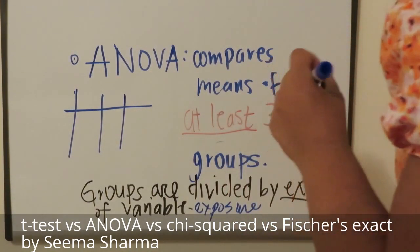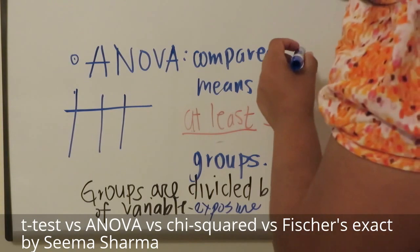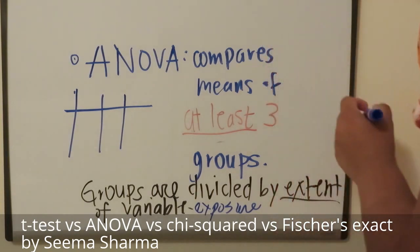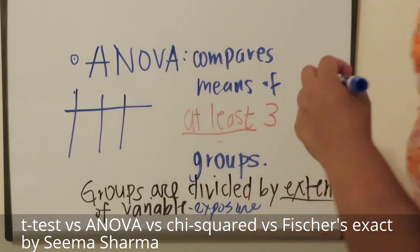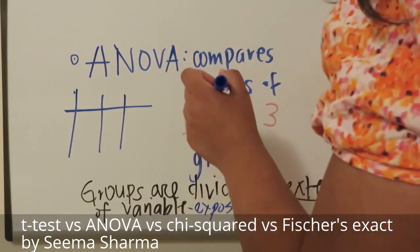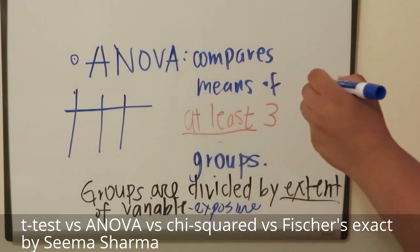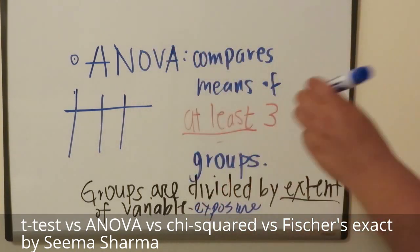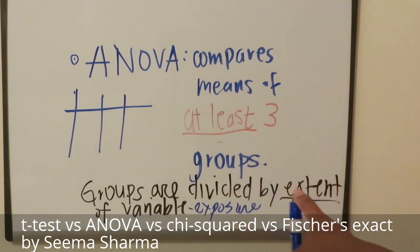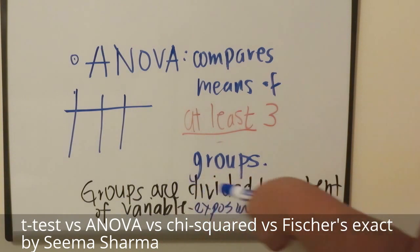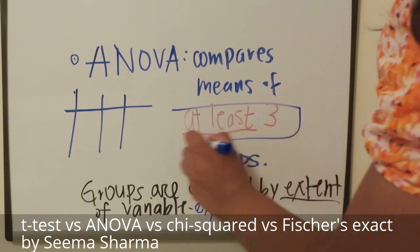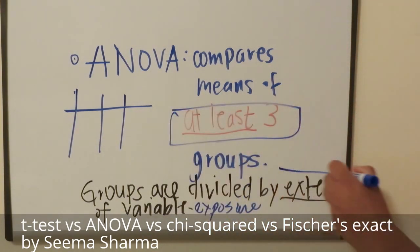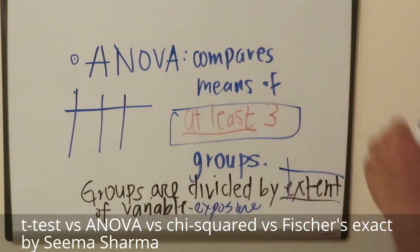If you have two variables — say sun and shade — then it's a two-factor ANOVA. Whether it's one factor or two factor, it's dependent on how many variables you have. But the groups themselves in ANOVA, of which you have at least three, are always divided by extent of variable exposure.